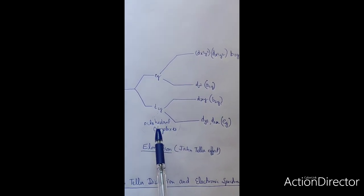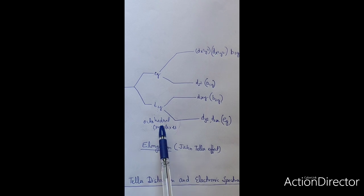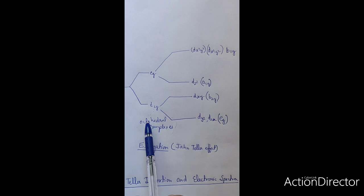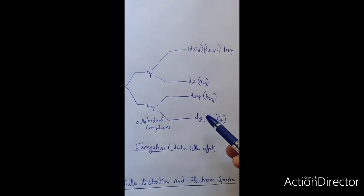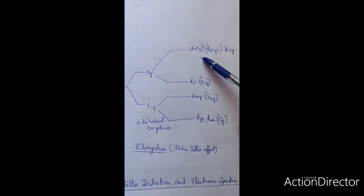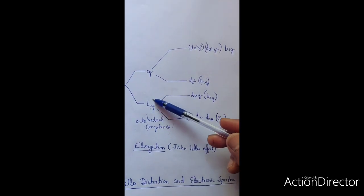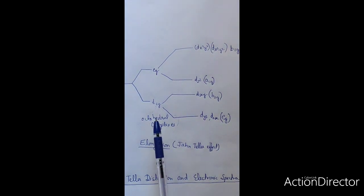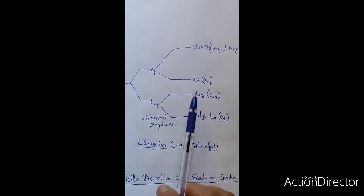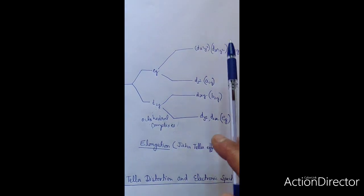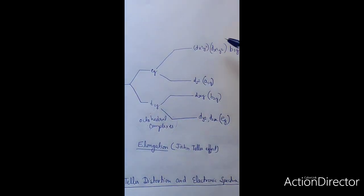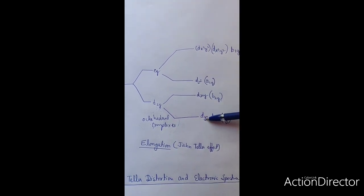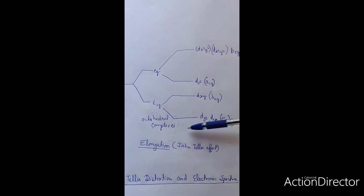Sometimes this octahedral complex has octahedral symmetry — Oh symmetry, that is higher symmetry. This octahedral symmetry undergoes a kind of distortion that lowers its symmetry. With lower symmetry, the t2g set cannot remain degenerate, so it splits into different orbitals: eg can split into dx²-y² and dz², and t2g can split into dxy, dyz, and dxz orbitals.